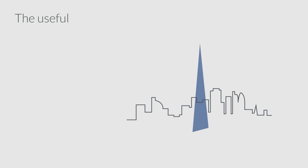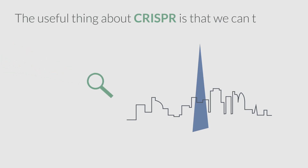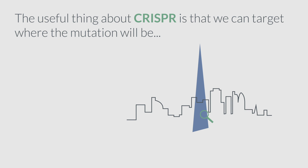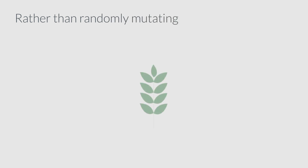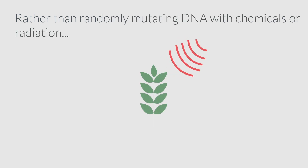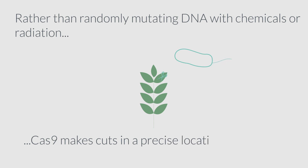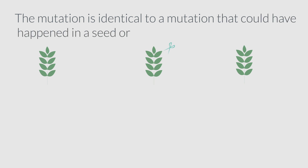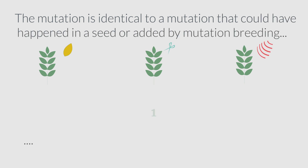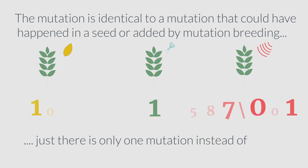The useful thing about CRISPR is that we can target where the mutation will be, instead of it being random. Rather than randomly mutating DNA with chemicals or radiation, Cas9 makes cuts in a precise location. The mutation is identical to one that could have happened naturally or been added by mutation breeding, but there is only one mutation instead of many.